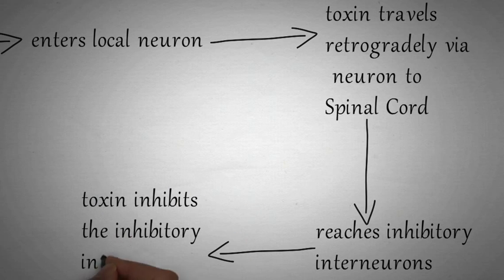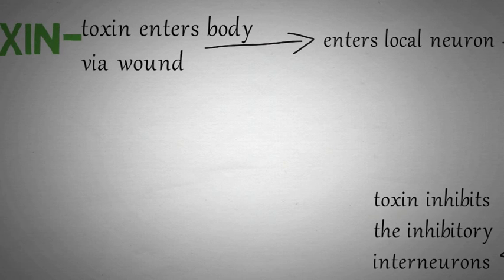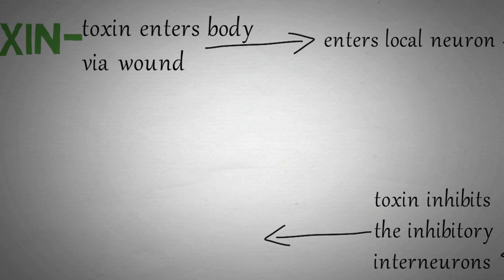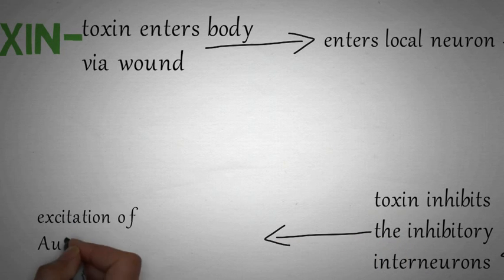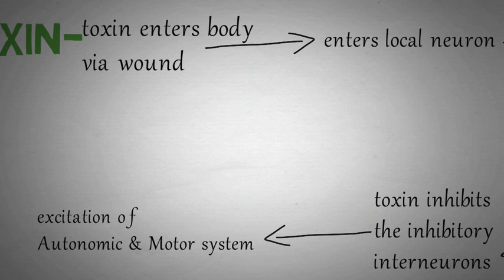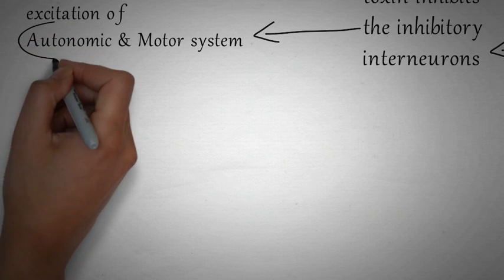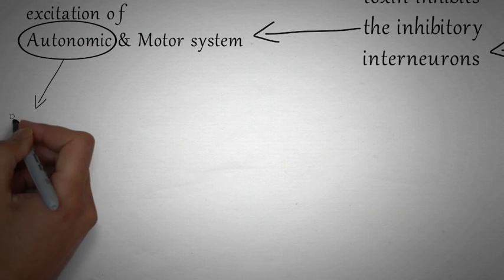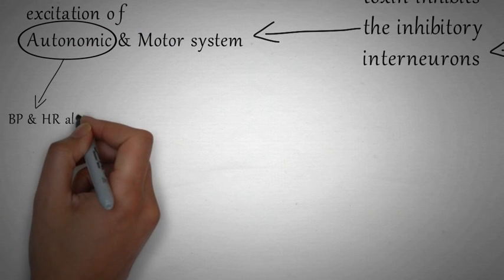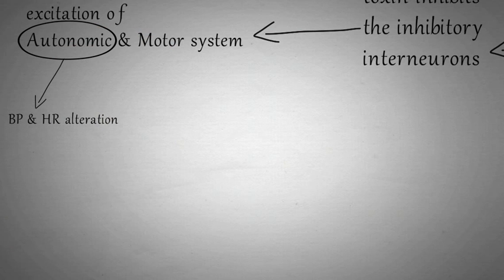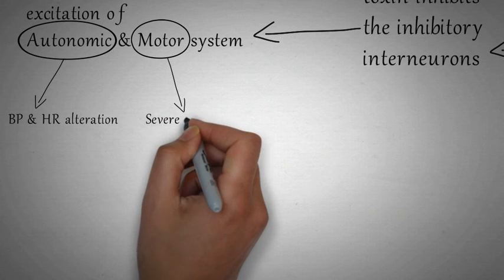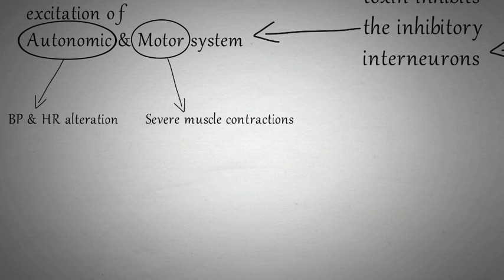The inhibition of the inhibitory interneurons leads to excitation of the autonomic and motor neurons. The excitation of the autonomic nerves leads to blood pressure and heart rate alterations, while the excitation of the motor neurons leads to severe muscle contractions all over the body.